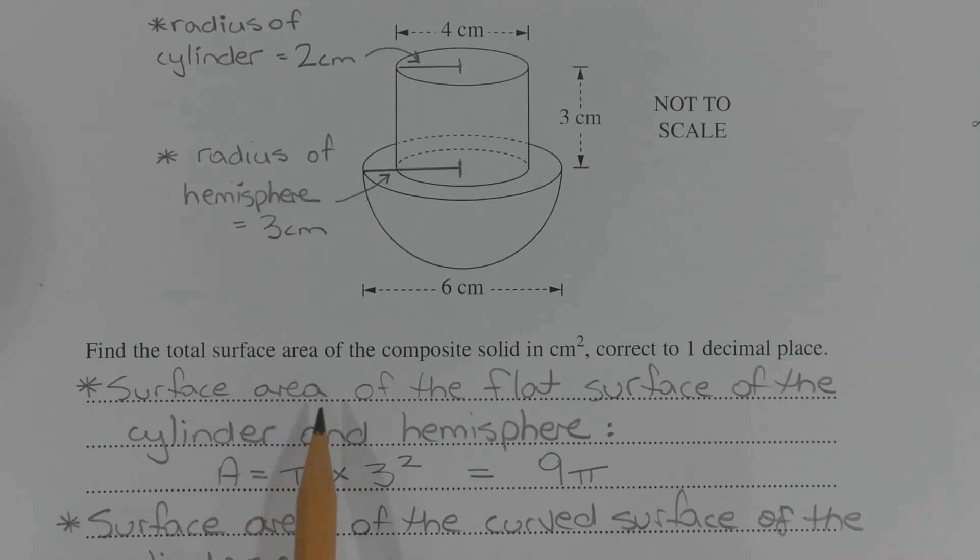Next, work out the surface area of the flat surface of the cylinder and hemisphere. In fact, the sum of this area here—the flat surface of the cylinder—plus this ring here, which is part of the flat surface of the hemisphere, is in fact equal to the entire surface area of the flat surface of the hemisphere, since this shape here fits into this shape here perfectly.